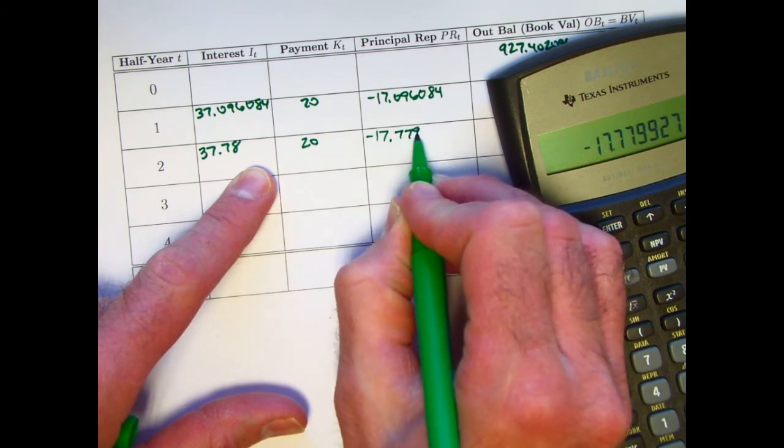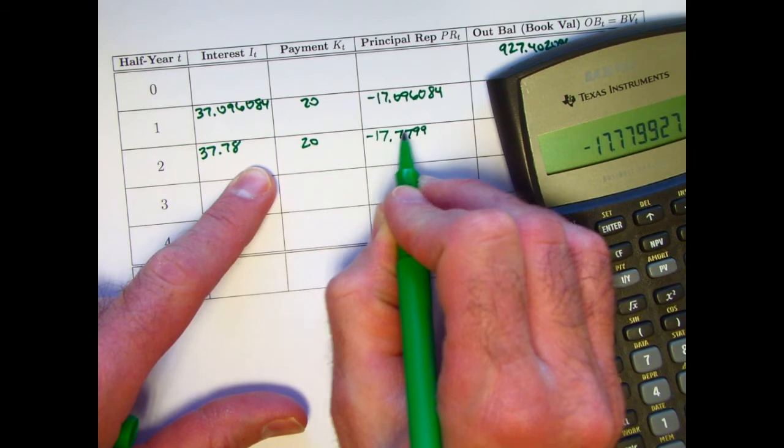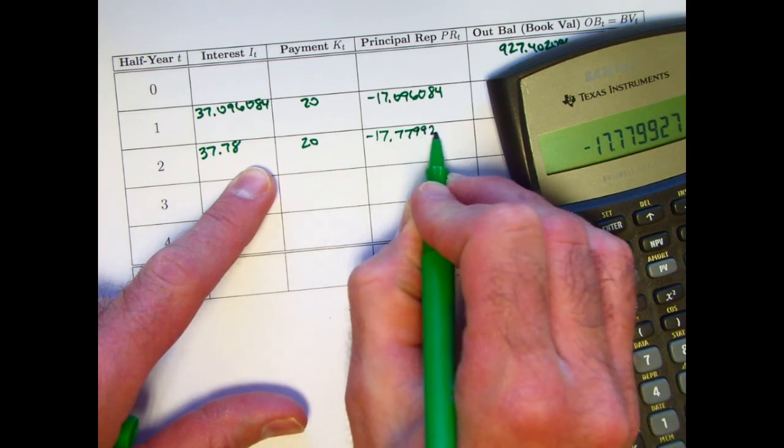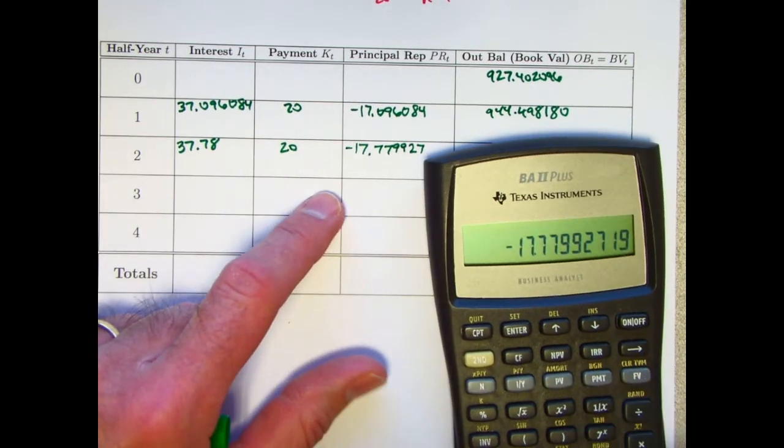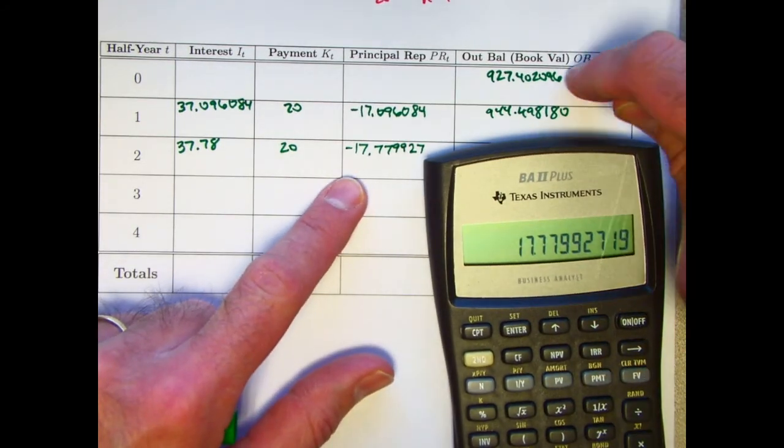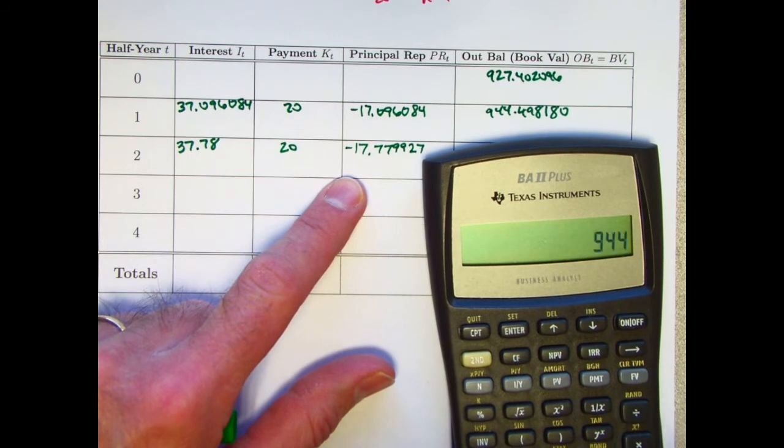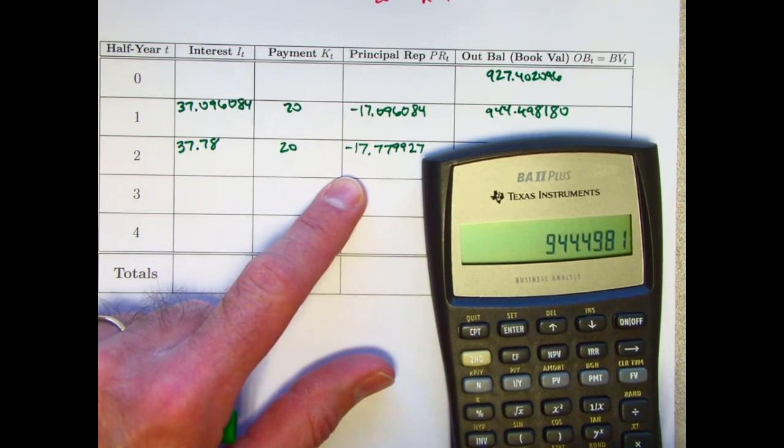If you thought of it as principal repossessed, so to speak, I guess you'd think of it as a positive quantity. But again, I want to use the same formulas. That's my motivation. Negate that. Add the result to 944 plus 944.49818.